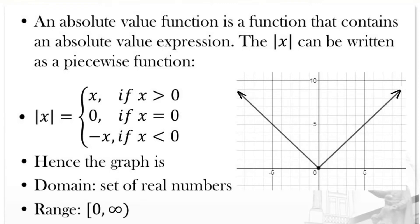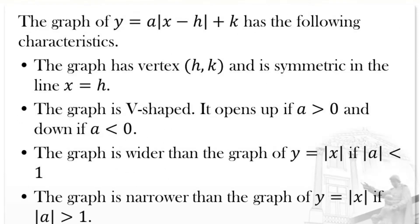So how do we graph absolute value functions? The graph of y equals a times the absolute value of (x minus h) plus k has the following characteristics. The graph has a vertex at (h, k) and is symmetric about the line x equals h.